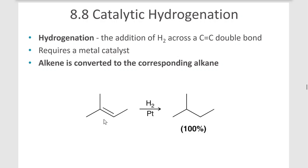If you have an alkene such as the one shown here with hydrogen in the presence of a platinum catalyst, we get the alkane at 100%.